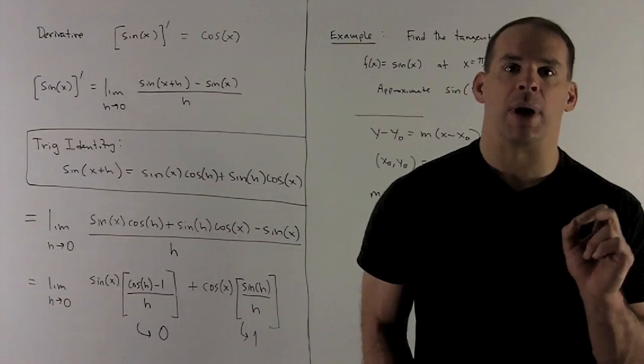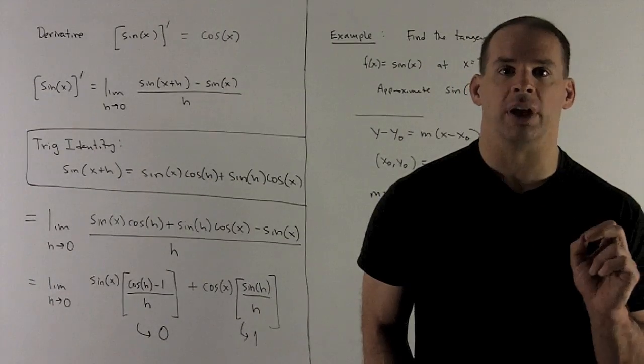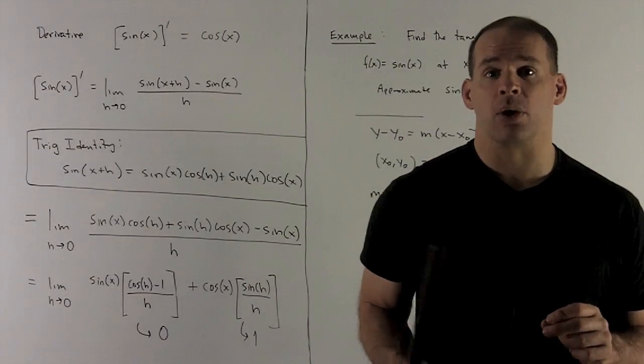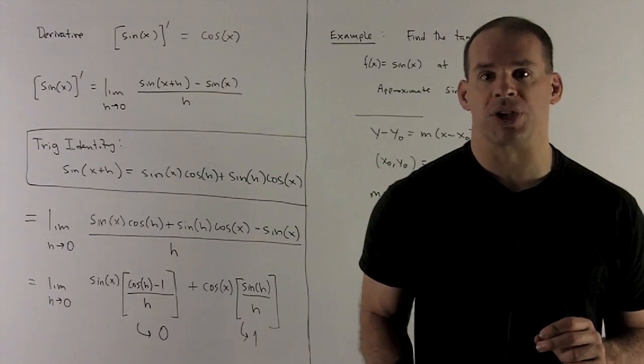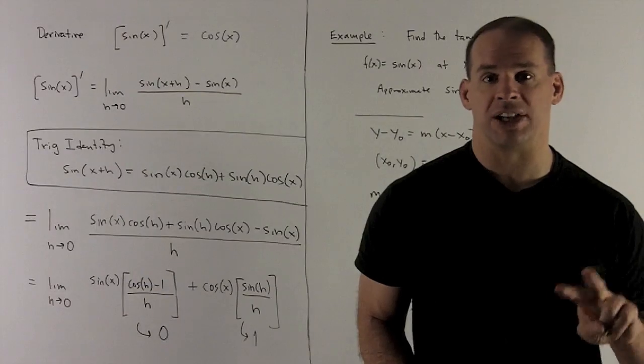So for the sum of two angles, when you take the sine, what do you do? You write down sine cosine twice, take the sum, and then we'll load into those sine cosines - xh and then hx.